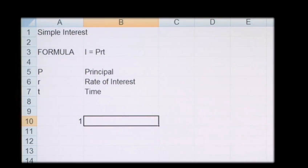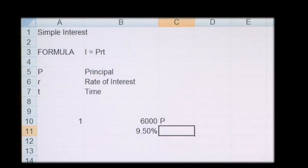In the first example, we're going to calculate the interest knowing the principal, the rate, and the time. If we have £6,000 to invest, this is your principal. The rate of interest that we generate is 9.5%, which is R, and we're going to invest this for 8 years, which is T.